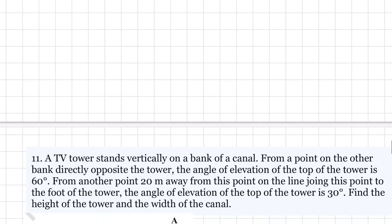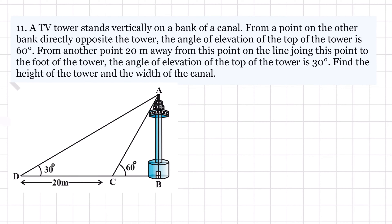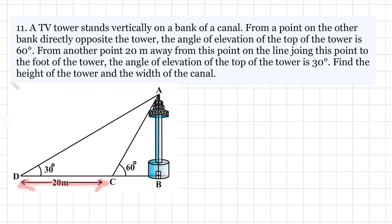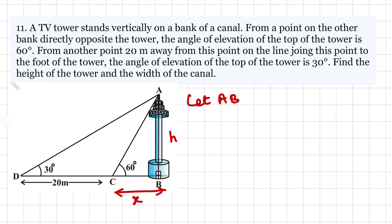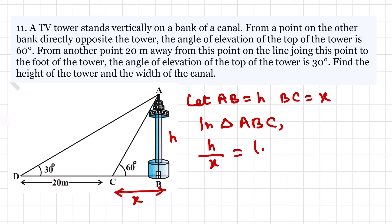Question number 11. A TV tower stands vertically on the bank of a canal. From a point on the bank directly opposite the tower, the angle of elevation of the top of the tower is 60°. And from a point 20 meters away, the angle of elevation is 30°. Find the height of the tower and the width of the canal. Let height of tower = h, BC = x.